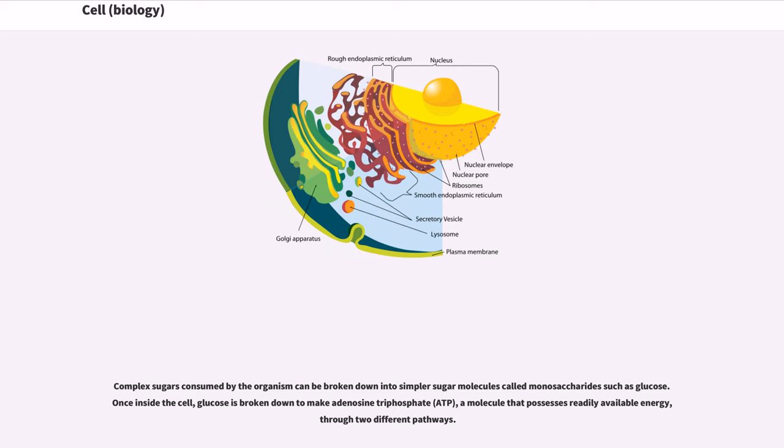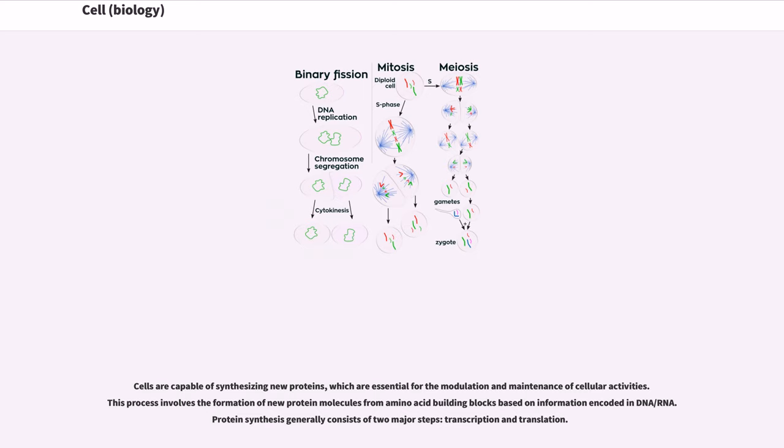Cells are capable of synthesizing new proteins, which are essential for the modulation and maintenance of cellular activities. This process involves the formation of new protein molecules from amino acid building blocks based on information encoded in DNA-RNA. Protein synthesis generally consists of two major steps: transcription and translation.